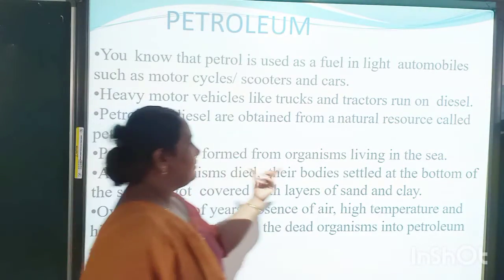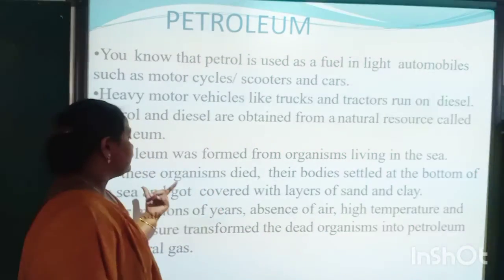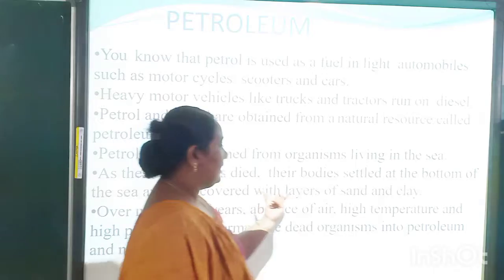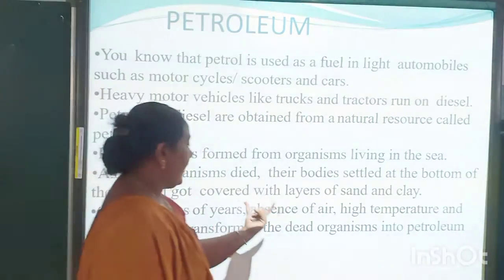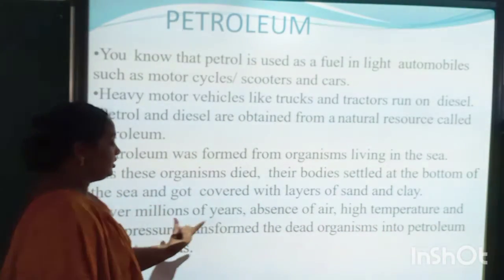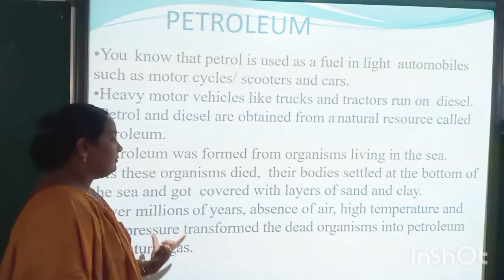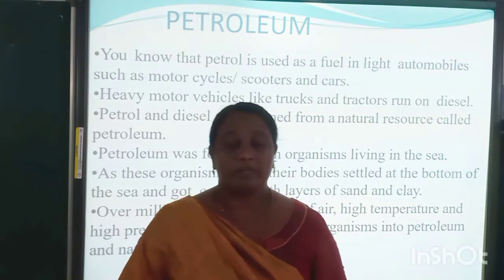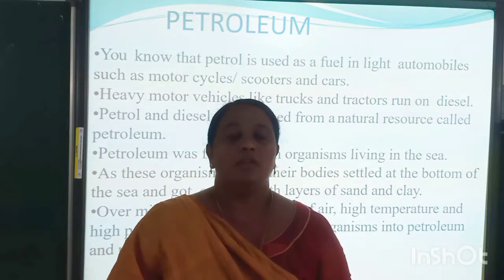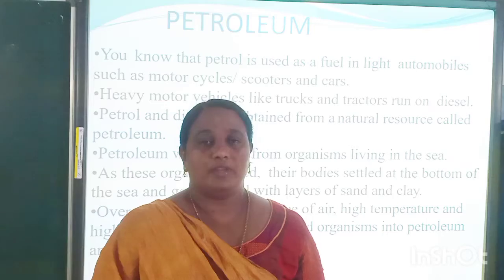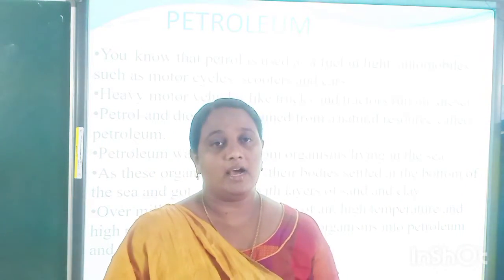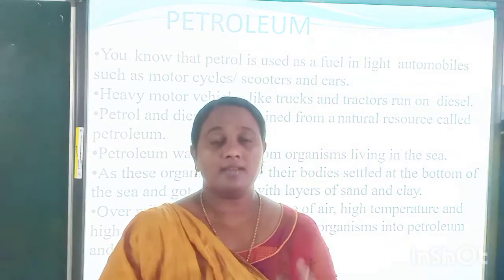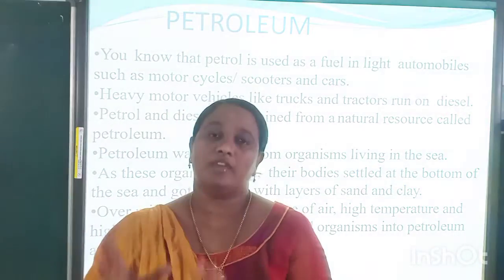Petroleum was formed from organisms living in the sea. As these organisms died, their bodies settled at the bottom of the sea and got covered with layers of sand and clay. Over millions of years, in the absence of air, with high temperature and high pressure, the dead organisms were transformed into petroleum and natural gas. This is similar to how coal was obtained — coal came from dense forests where trees, plants, and animals were buried under soil.